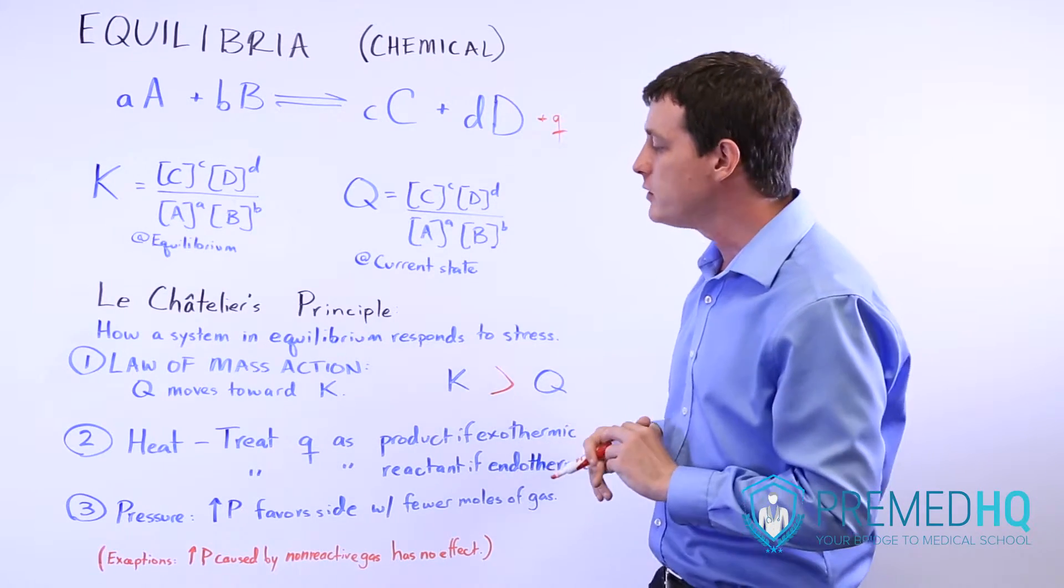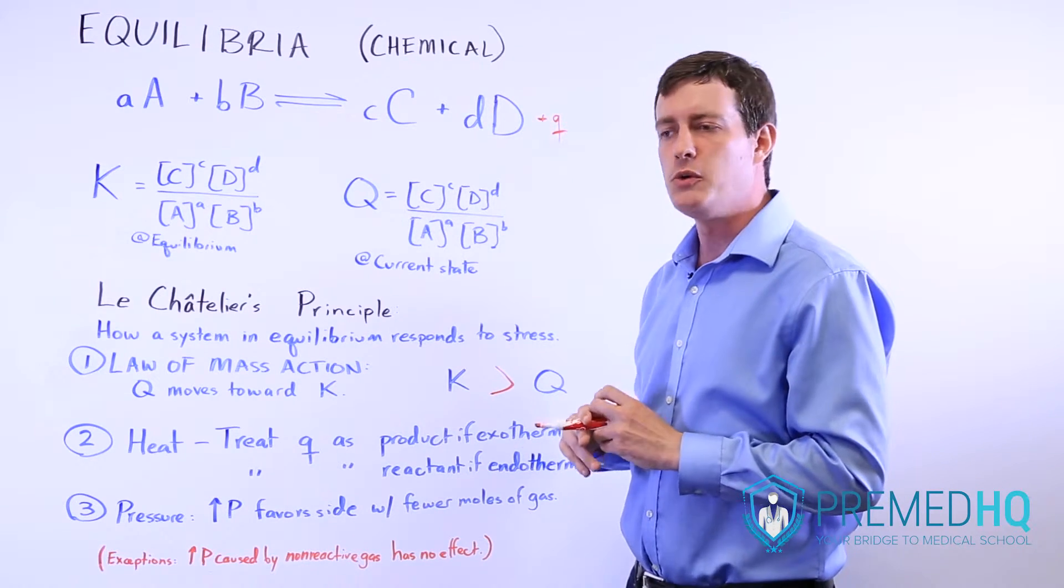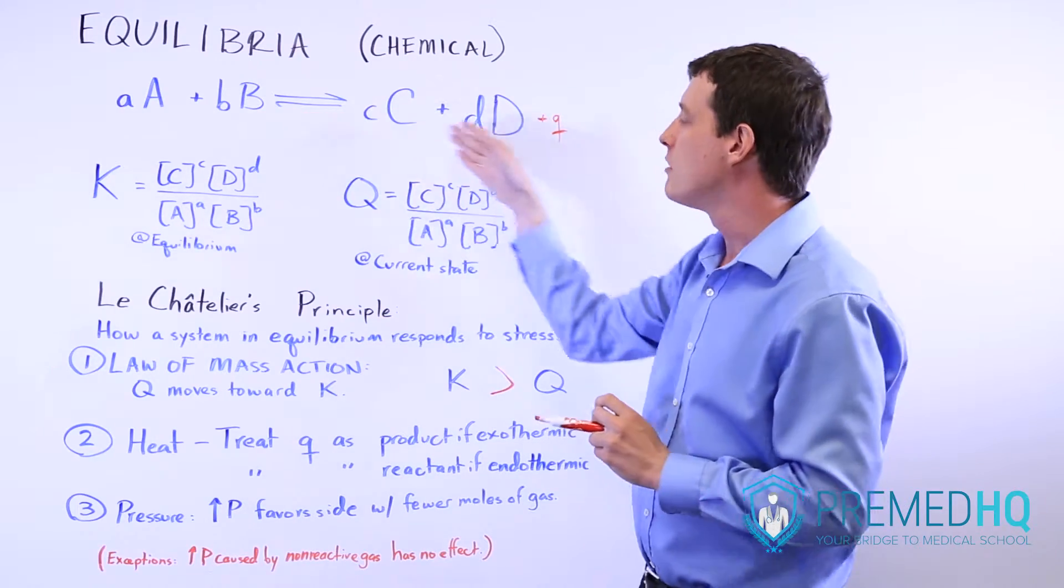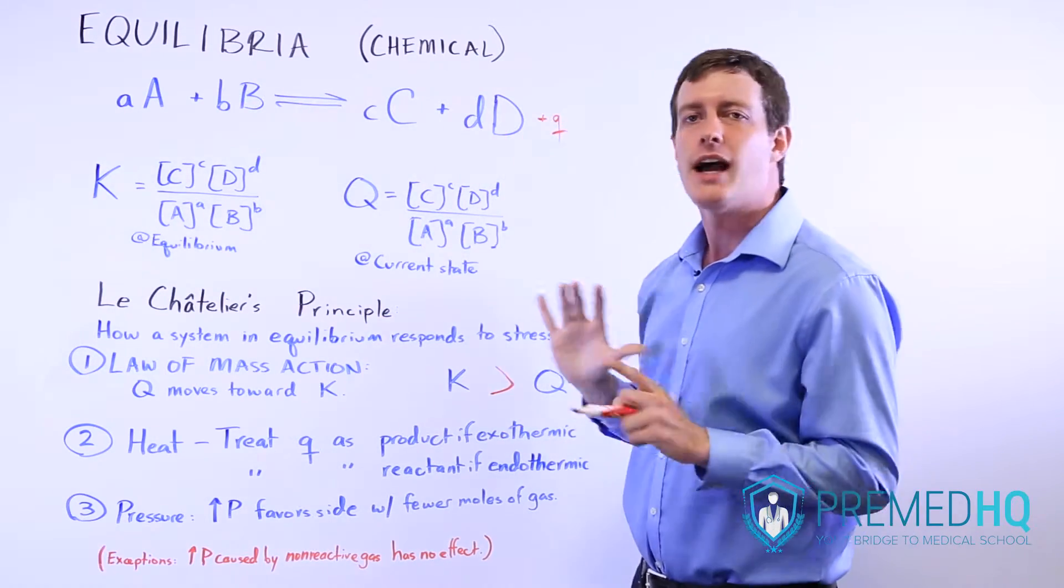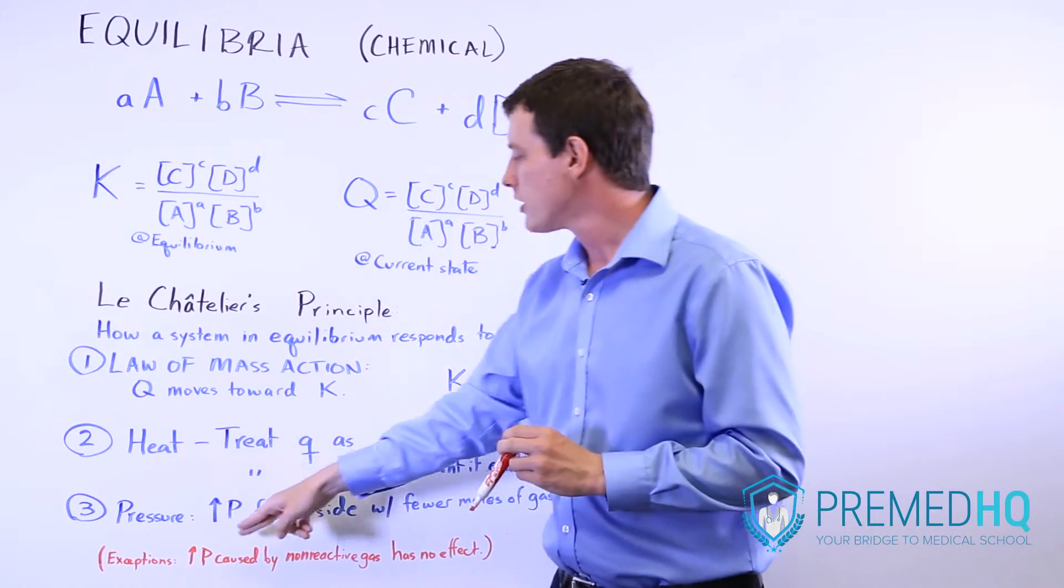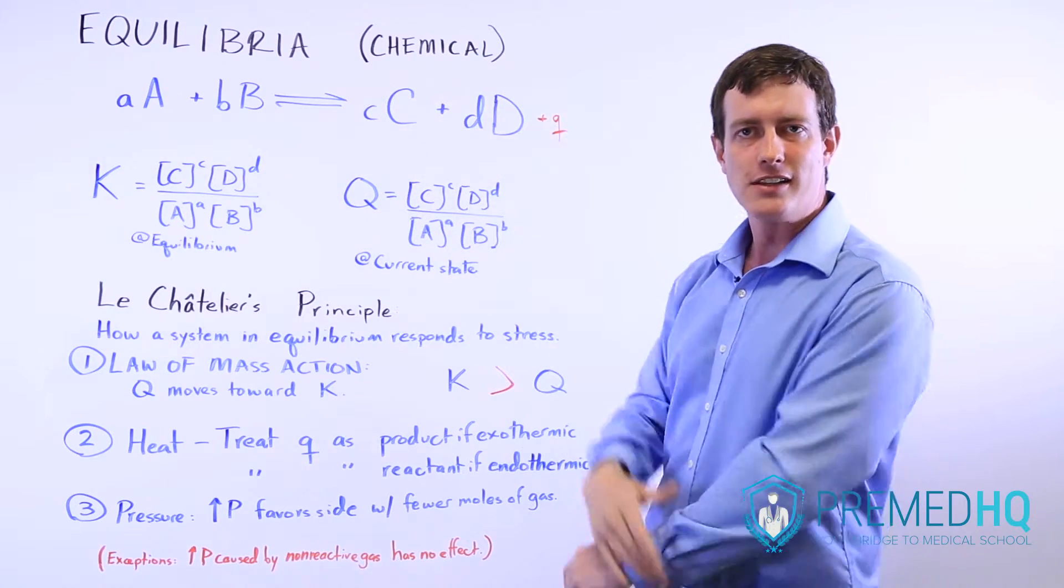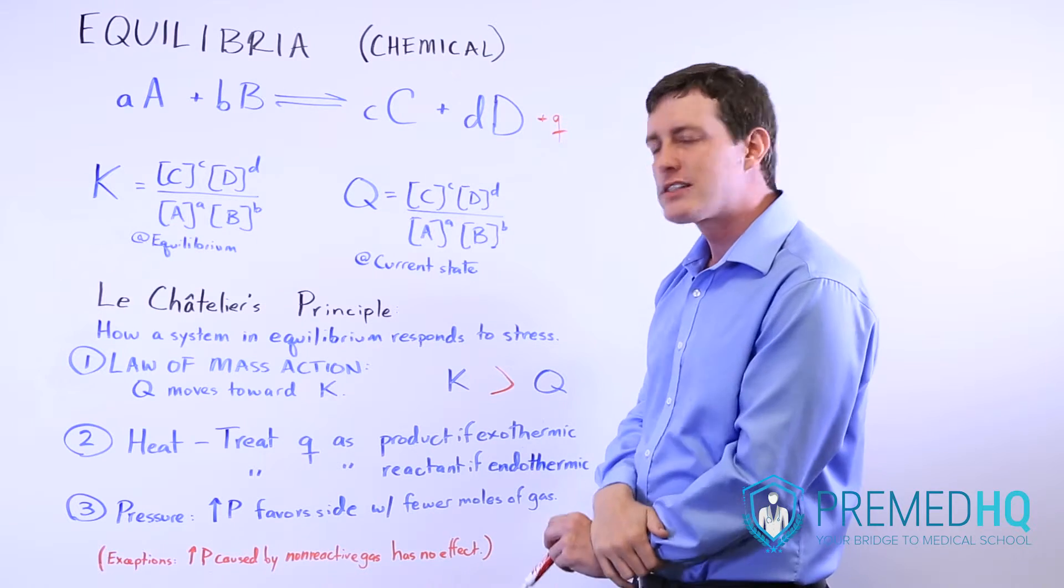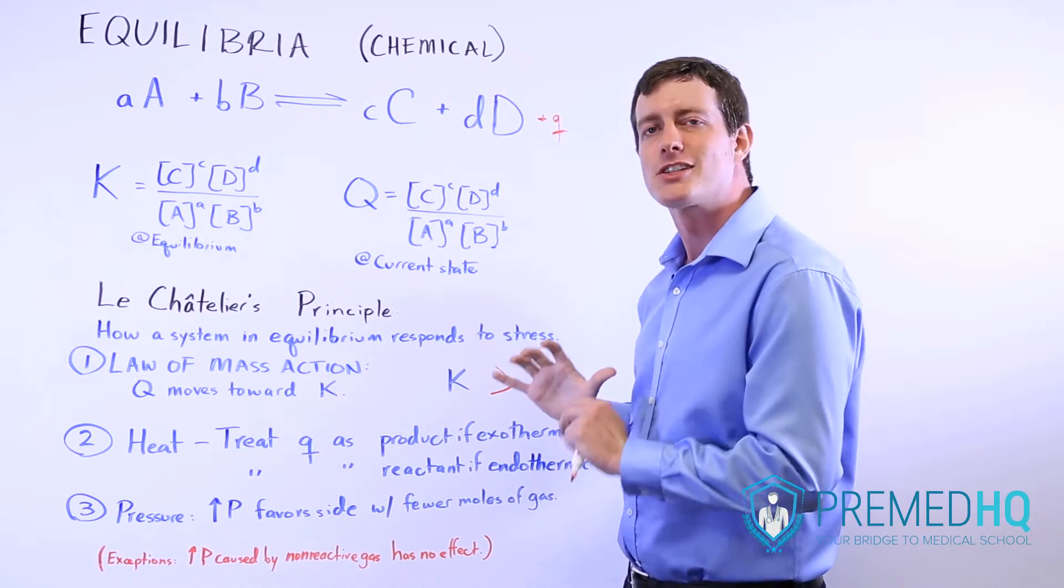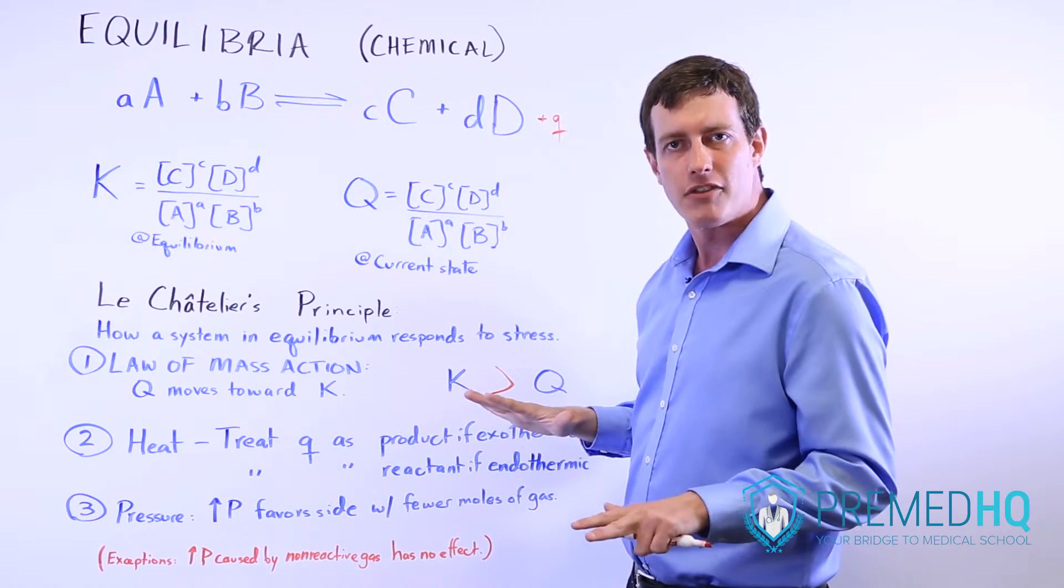Now, there is one exception, and that is that if you see an increase in pressure that's caused by a non-reactive gas, so that means that you perhaps add a gas to the system, but that gas is not part of this balanced formula, then that will not have an effect because what you really are looking at is what are the partial pressures of the gases that actually participate in this reversible reaction equation. That's the one exception. If you have an increase in pressure, but the gas that's causing that increase of pressure is not part of the balanced equation, that will have no effect.